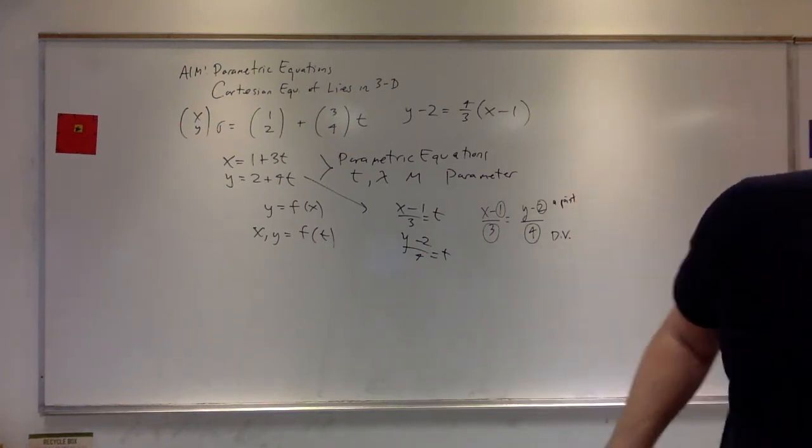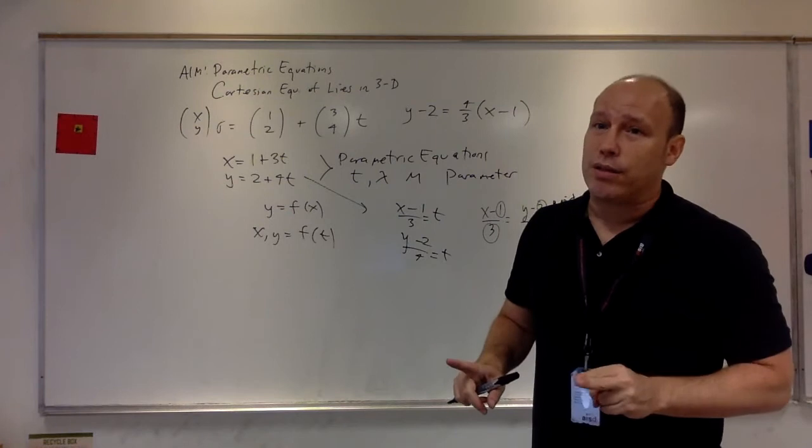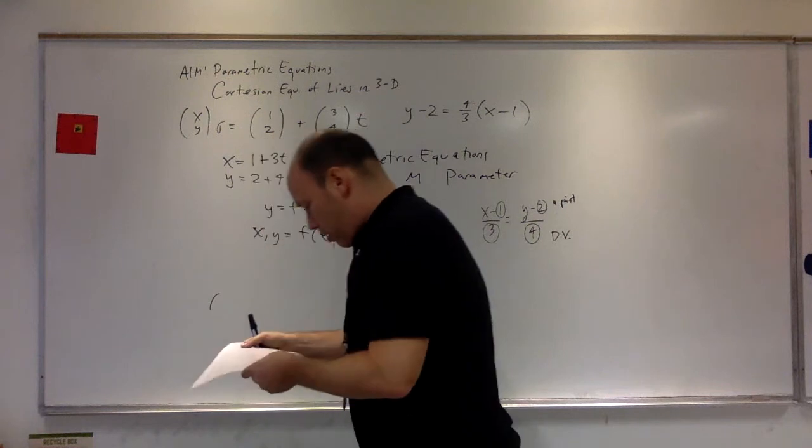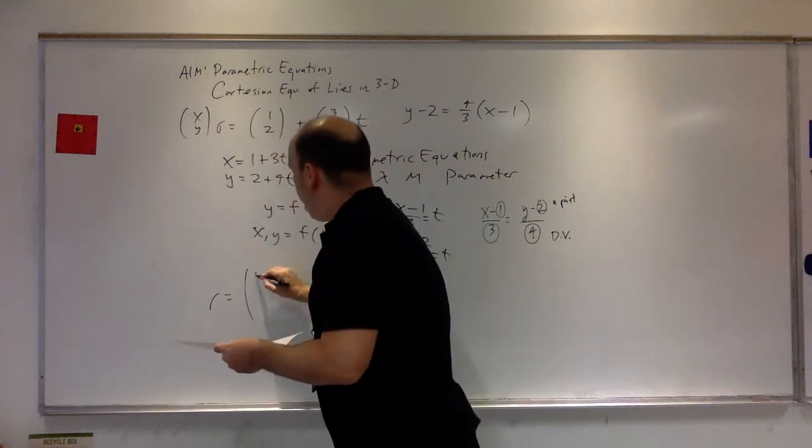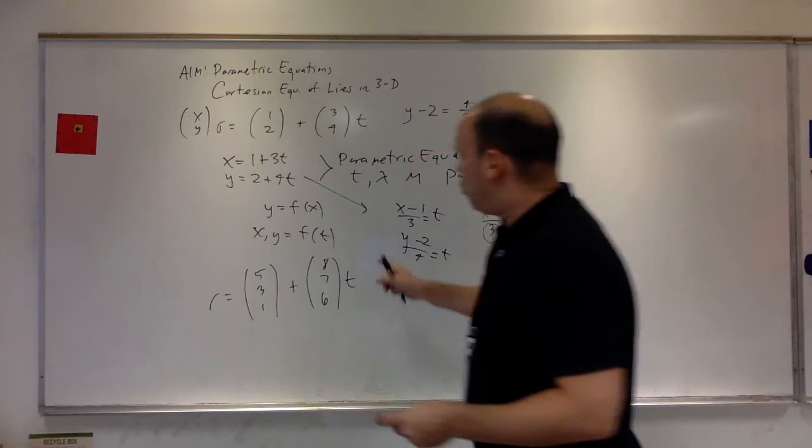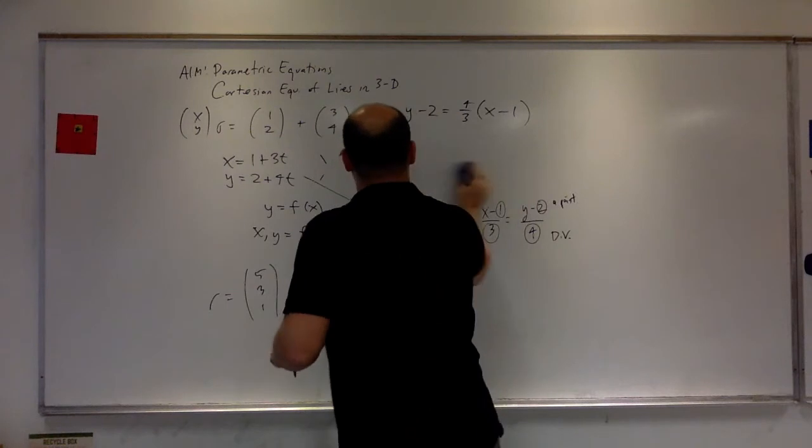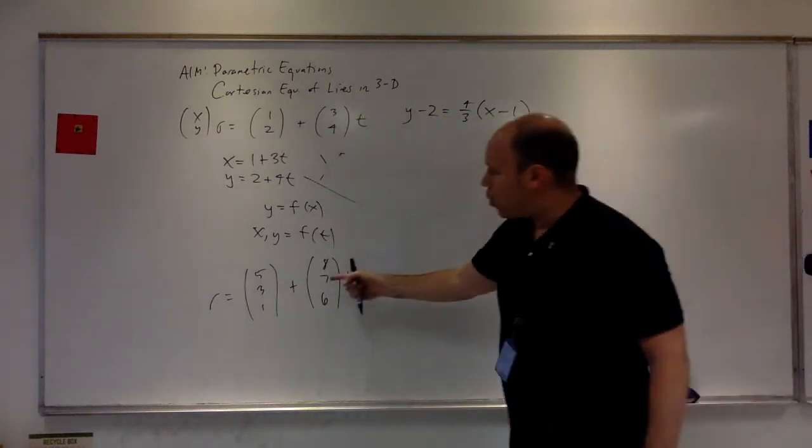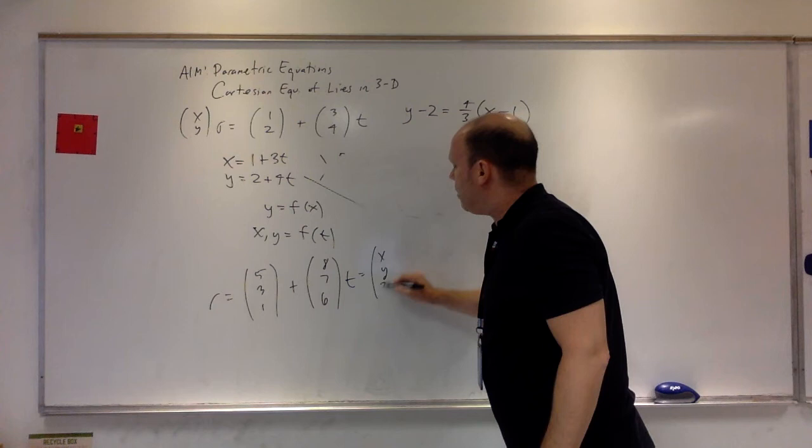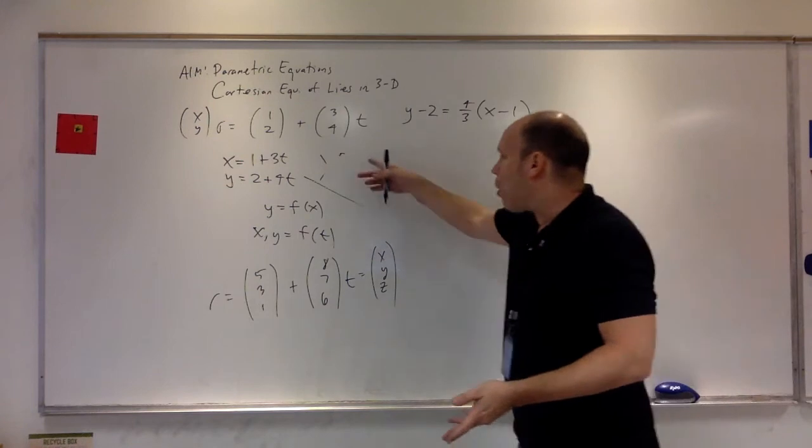But you're noticing, the 1 and 2, that was the points that the line passed through, and the 3 and 4 represented the direction vector. So this is the direction vector and this is a point. Now this is kind of interesting because now we have a way of representing vector equations in 3 space and Cartesian equations. It's going to look a little weird. So let's do the next example.